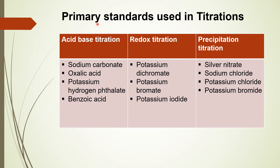Some examples of primary standards: in acid-base titration — sodium carbonate, oxalic acid, potassium hydrogen phthalate, and benzoic acid; in redox titration — potassium dichromate, potassium bromate, and potassium iodate; in precipitation titration — silver nitrate, sodium chloride, potassium chloride, and potassium bromate.